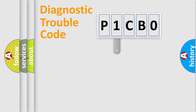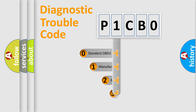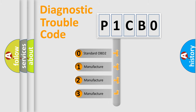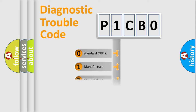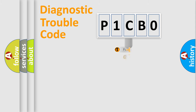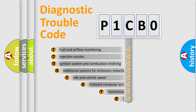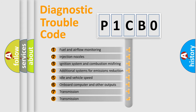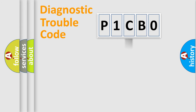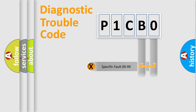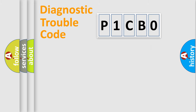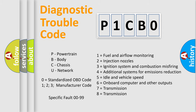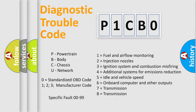This distribution is defined in the first character of the code. If the second character is expressed as zero, it is a standardized error. In the case of numbers 1, 2, or 3, it is a manufacturer-specific error. The third character specifies a subset of errors. Only the last two characters define the specific fault of the group. This division is valid only if the second character code is expressed by the number zero.